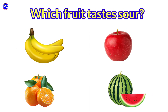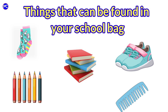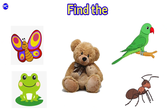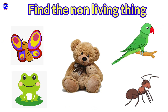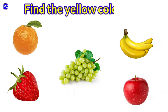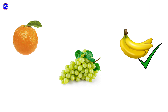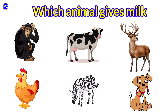Which fruit tastes sour? Answer is orange. Which things can be found in your school bag? Answer is pencil and books. Find the non-living thing. Answer is jar. Find the yellow color fruit. Answer is banana. Which animal gives milk?